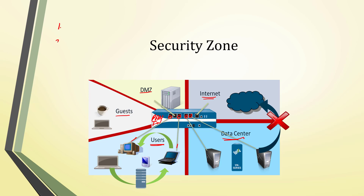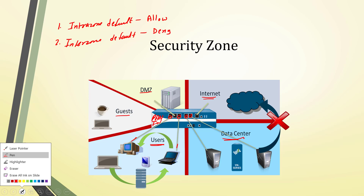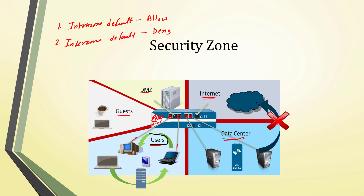This behavior is because of two default rules: the first is the intrazone-default rule with action Allow, and the second is the interzone-default rule with action Deny. Traffic within the same zone is allowed by the intrazone rule; traffic between different zones like Data Center to Internet or DMZ to Internet is blocked by the interzone rule. We can modify both rules, but this is the default behavior.